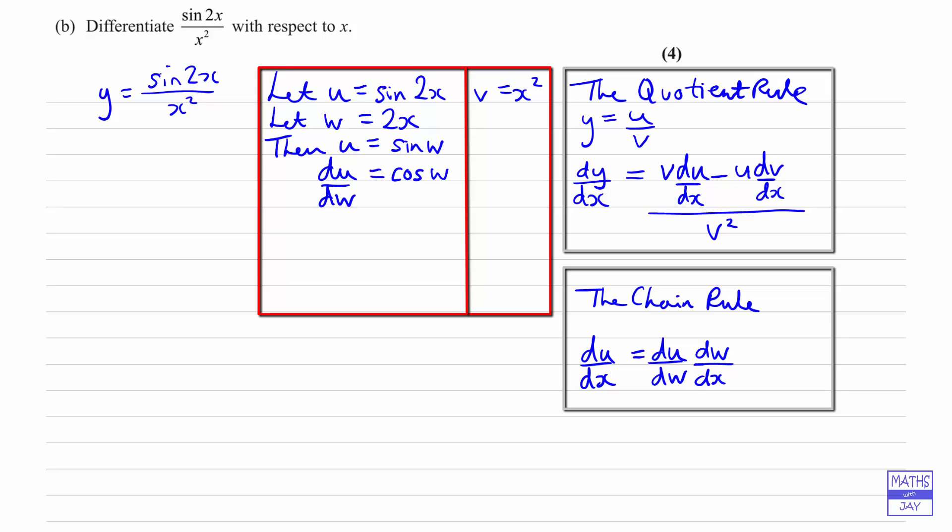And then we want to work out dw by dx. So now we're looking at what w is in terms of x, so it's 2x, so differentiating 2x gives us 2.